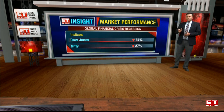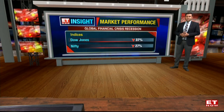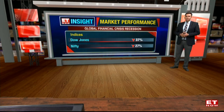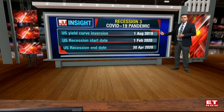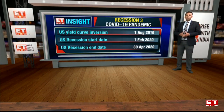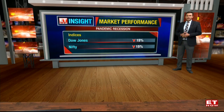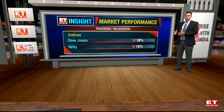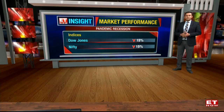The last one, which is the shortest recessionary period we have seen in the last couple of decades, has been the COVID-19 pandemic. You can see that the yield curve in fact inverted in 2019, whereas the market slipped into recession in 2020. The markets reacted with both the Nifty and the Dow Jones managing to slip 15% during this time frame of about two months. So it definitely looks like the yield curve inversion is a precursor to the markets slipping into a recession period.